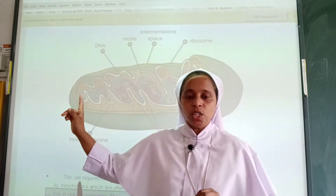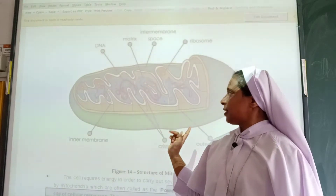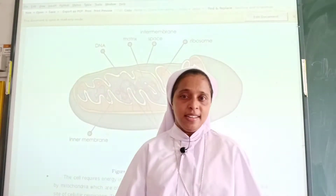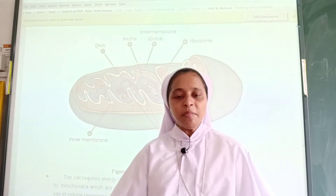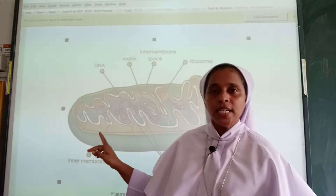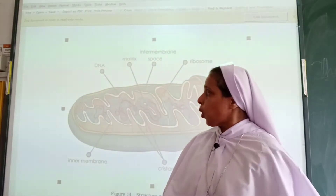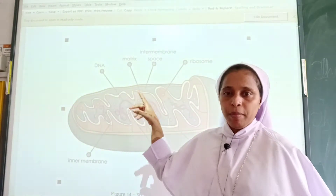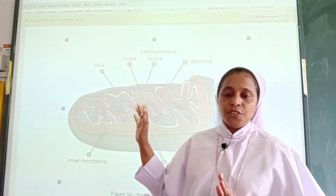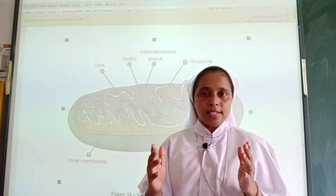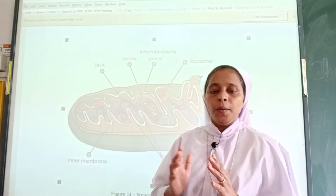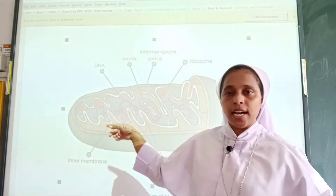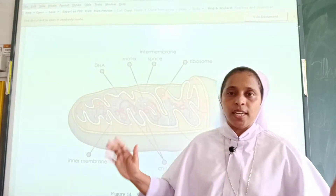Mitochondria has two membranes: an outer membrane and an inner membrane. The outer membrane is porous in nature. The inner membrane is deeply folded and is called cristae — you can see the finger-like folded structure. The cristae facilitate the generation of ATP molecules, and because they have a larger surface area, more ATP is generated.